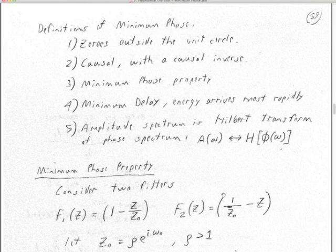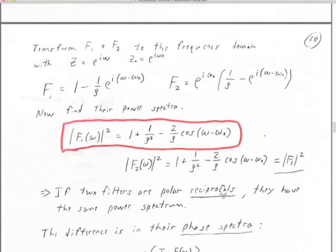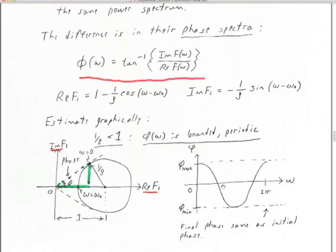Property number 4: it has minimum delay — energy arrives most rapidly. Another property we'll see today is that the amplitude spectrum is the Hilbert transform of the phase spectrum, and vice versa, with a little manipulation. One question I probably didn't address enough is: minimum phase of what? I want you to study the explanation of the minimum phase property, how I derive the phase, and what the phase spectrum really means — particularly this diagram right here.